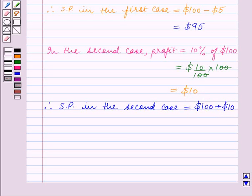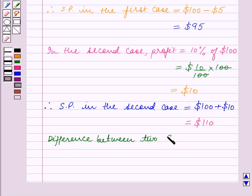$10, which is equal to $110. Now the difference between two selling prices is equal to $110 minus $95, and this is equal to $15.